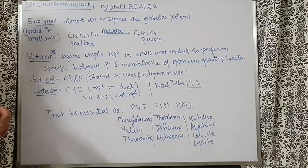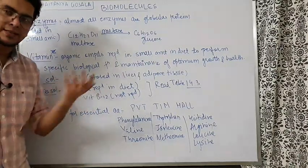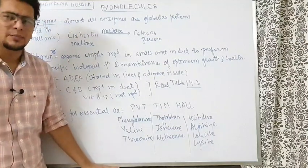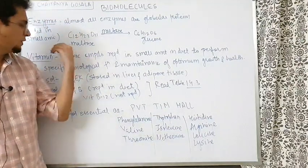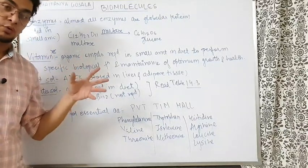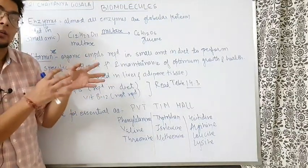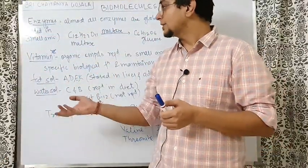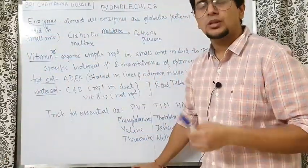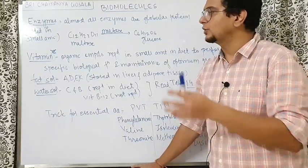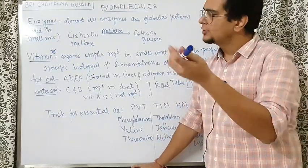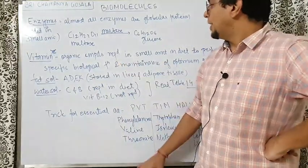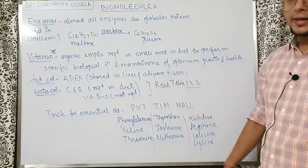Moving on to vitamins — vitamins previously had the spelling V-I-T-A-M-I-N-E because people thought they were vital amines. But later it was found that most vitamins are not even amines, so they removed the letter 'e' so that people would not realize what they were originally thinking. Otherwise people would wonder how they could name something 'vitamine' when most vitamins are not amines at all.